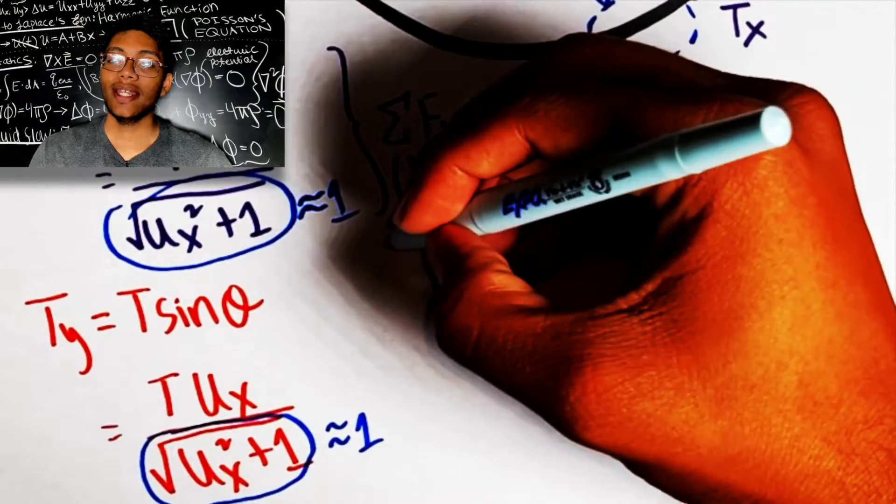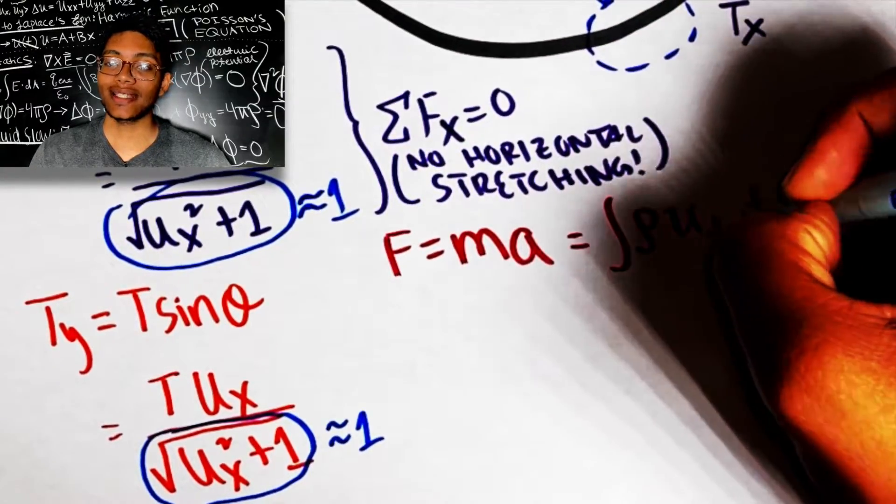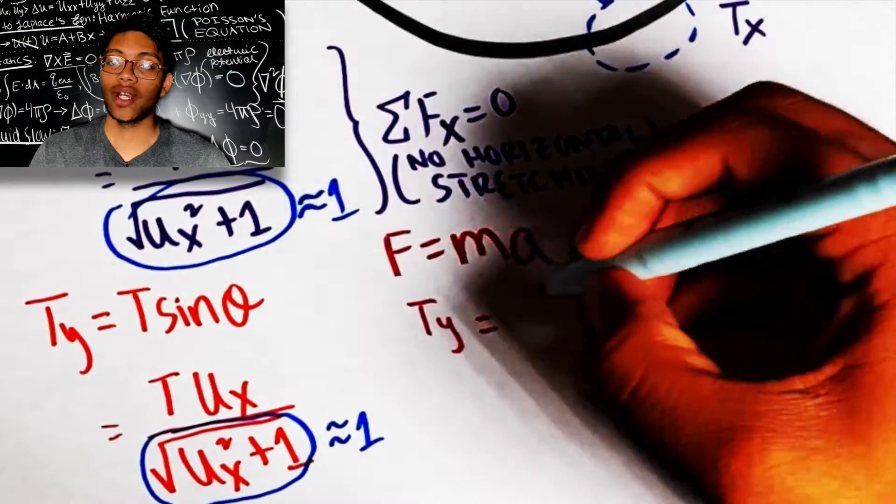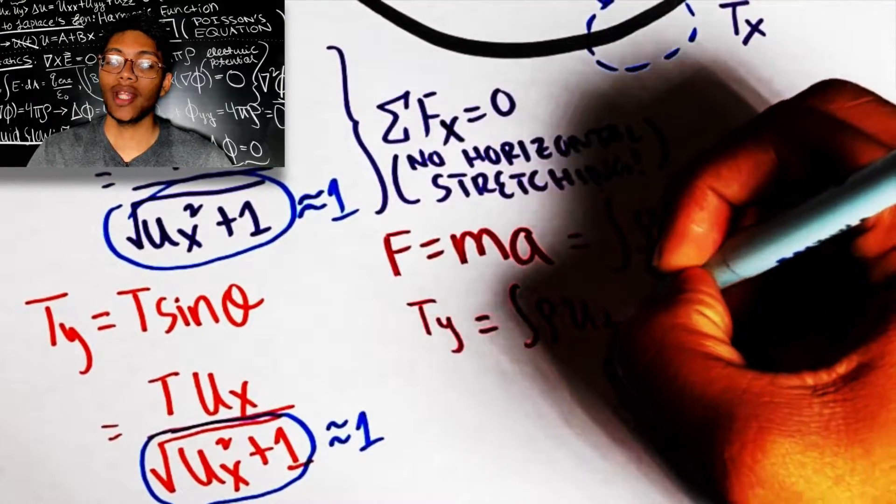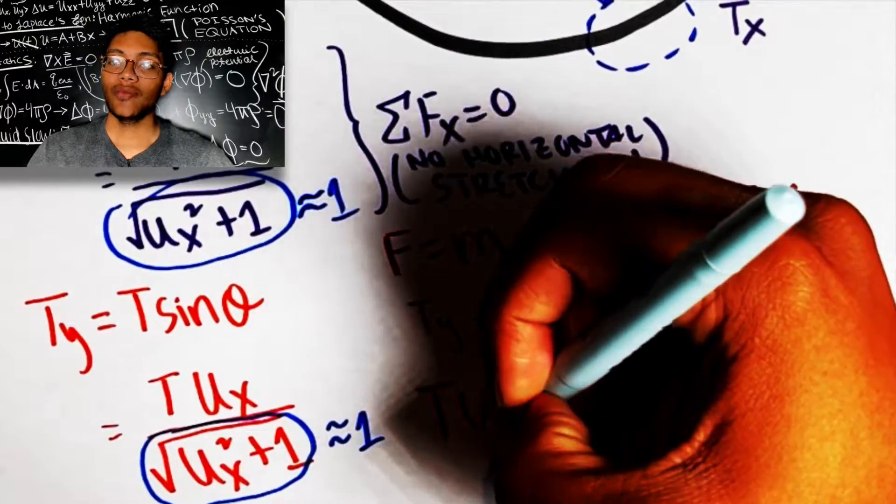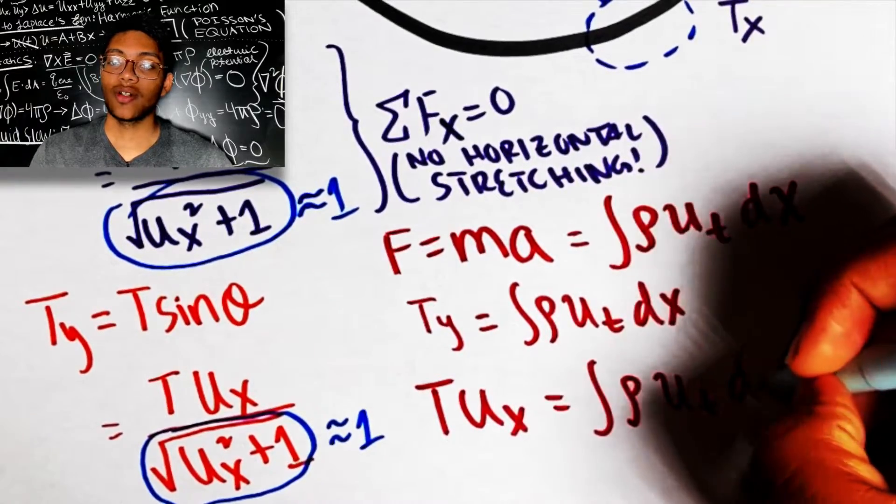We simplify that. m is represented by rho, the density, times some unit length dx integrated over the entire string times the acceleration of the wire u_tt. So now there's a little typo there. That should be tt. But anyway, now we have that, and we can go ahead and solve for the wave equation.